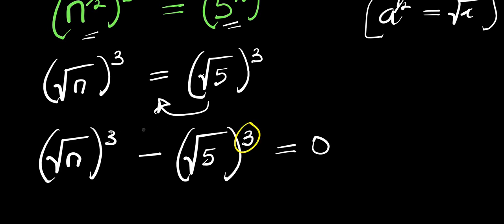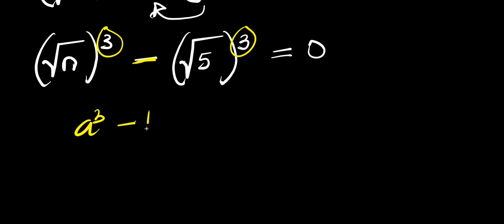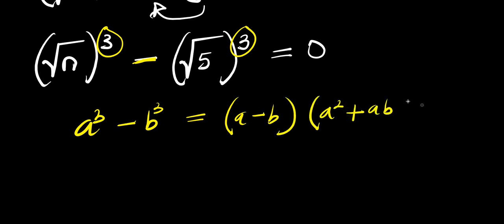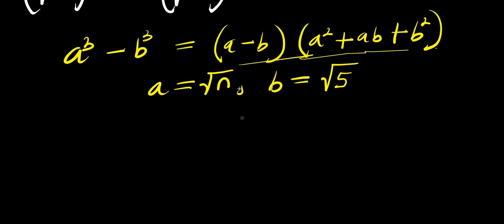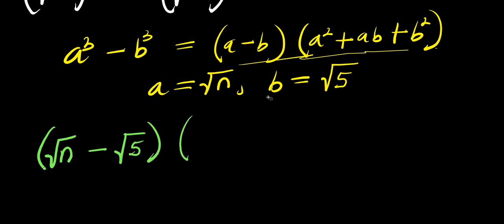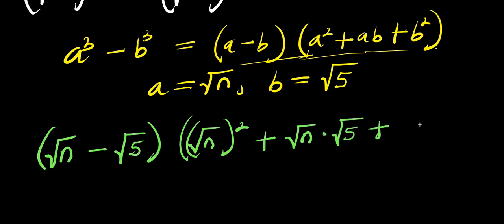Right now we have power 3 here and power 3 here with a minus, so we apply the difference of cubes: a cubed minus b cubed equals (a minus b)(a squared plus ab plus b squared). In this case a equals root n and b equals root 5. So we have: root n minus root 5, times root n squared plus root n times root 5, plus root 5 squared, equals zero.